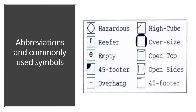Every officer and crew member should know how to read and understand the schematic plan provided by the local cargo planner. The plan uses many symbols and abbreviations you need to be familiar with. You can also get information about a container from its number — whether it's 40 feet or 20 feet, a reefer, or a high-cube container. If you receive a plan with unfamiliar symbols, ask the shipping agent what each symbol means.